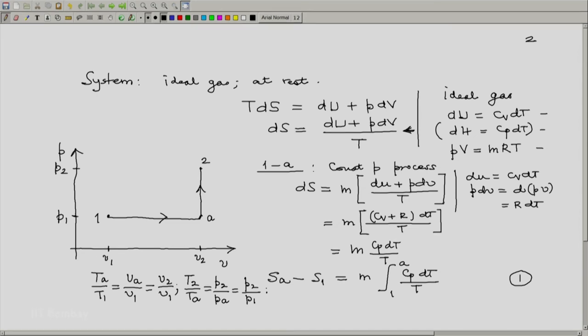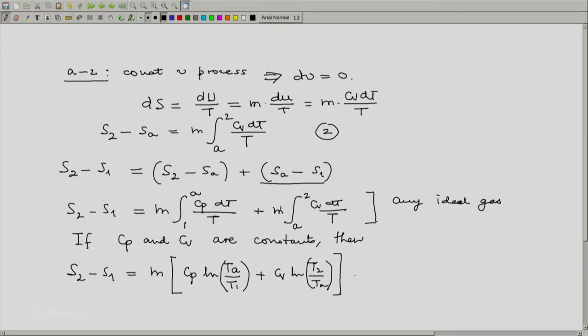Now using these two expressions, we can go back and simplify our expression for change in entropy for an ideal gas at constant specific heats. That will be equal to M into Cp ln V2 by V1 plus Cv ln P2 by P1.